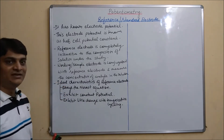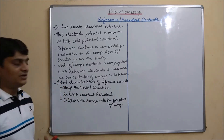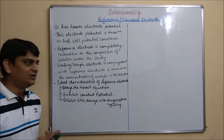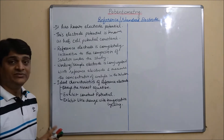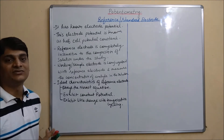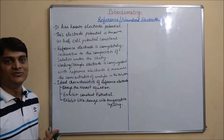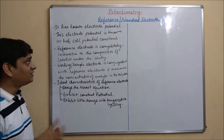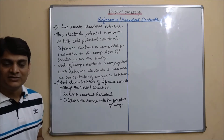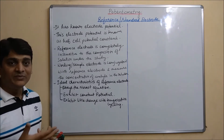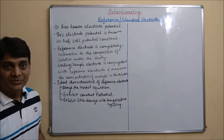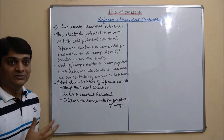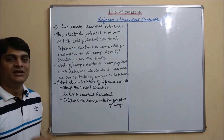Standard conditions mean the concentration of the solution should be 1 molar, temperature should be 25 degrees Celsius, and pressure should be 1 atmospheric pressure. Now, there are mainly 3 types of reference electrodes used in analysis or in potentiometry.